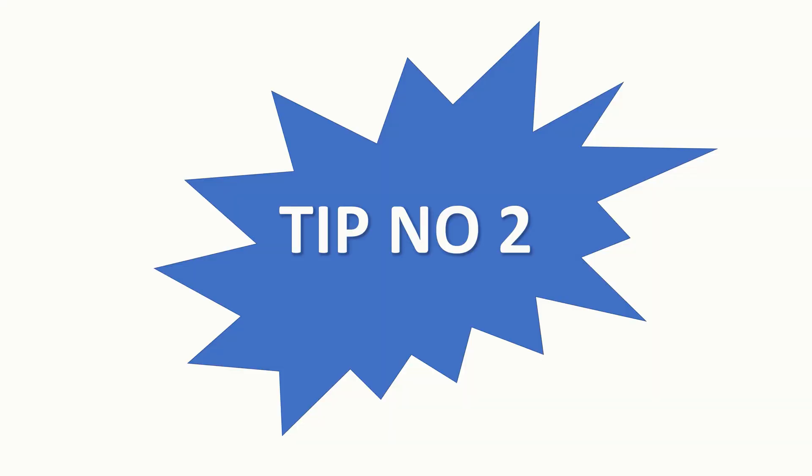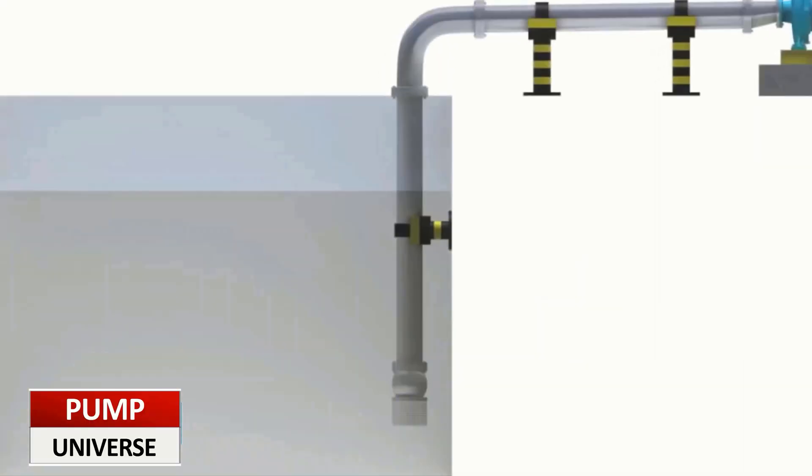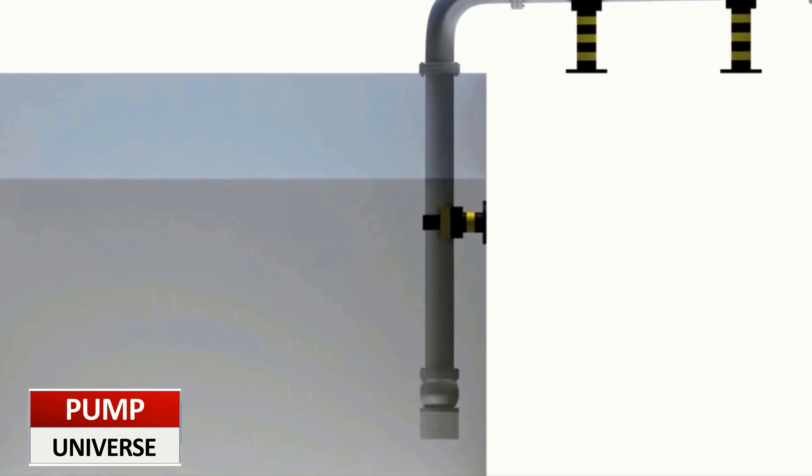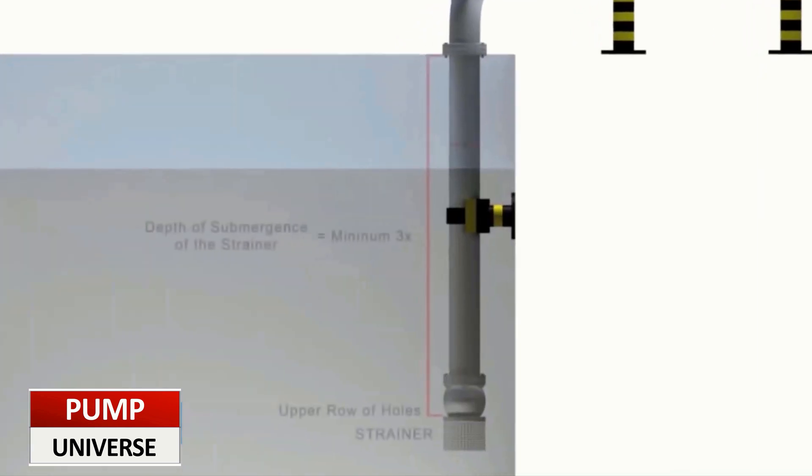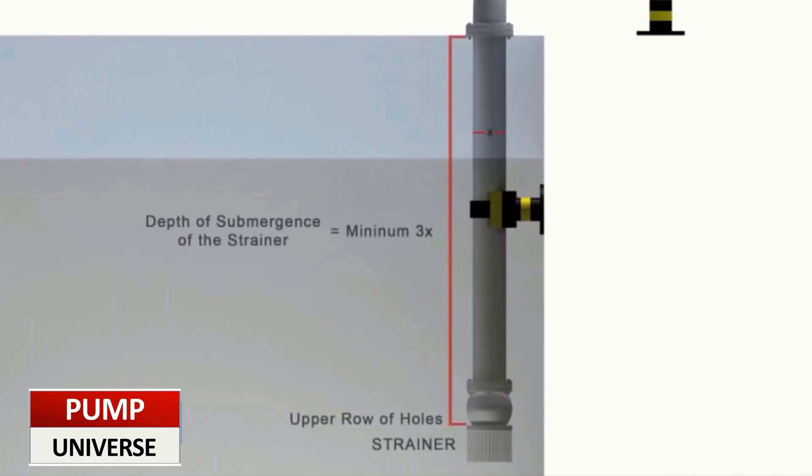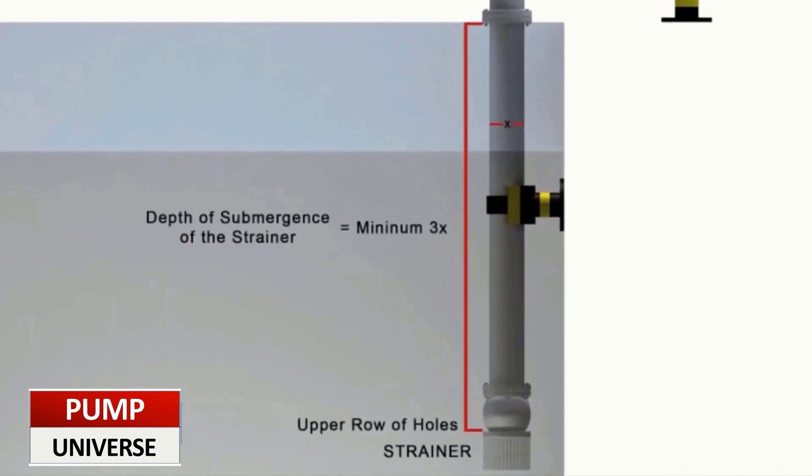Tip number two: Minimum submergence. Minimum submergence is required to make sure that the effects of air entrapment or vortexing are minimized in a submersible pump. So whenever you are designing a system, please ensure that the minimum submergence mentioned by the manufacturer is met so that we eliminate or minimize the vortexing or air entrapment issues.